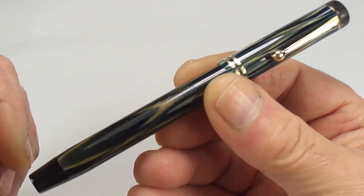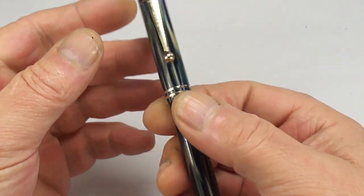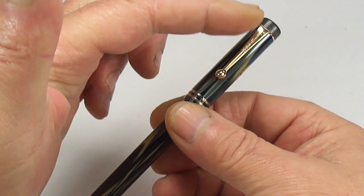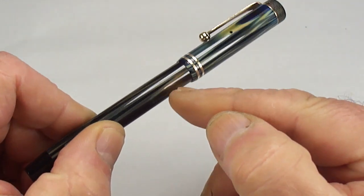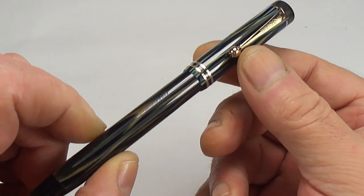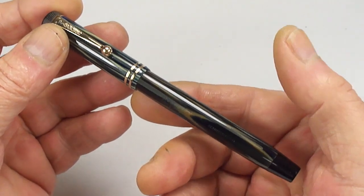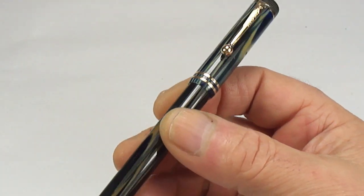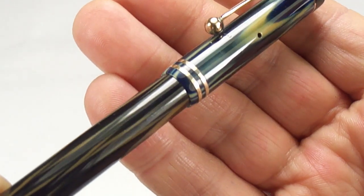This particular one was made in Canada. The size from top of cap to bottom of barrel is 135 millimeters capped, around 10.5 to 11 millimeters in diameter. It's got two gold cap bands.